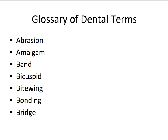Bonding refers to the process by which a tooth-colored filling material or orthodontic brackets are attached to a tooth. A bridge is an appliance that is cemented in place and replaces a missing tooth by attaching an artificial tooth or teeth to the natural teeth next to it. Like the word suggests, a bridge bridges two natural teeth together, connected by a fake tooth in the center to restore that spot.